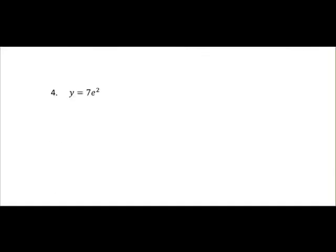Finally, if you come across something like y equals 7E squared, when we differentiate that it's just equal to 0. The reason for that is 7E squared is just a constant. So like all constants, it differentiates to 0.